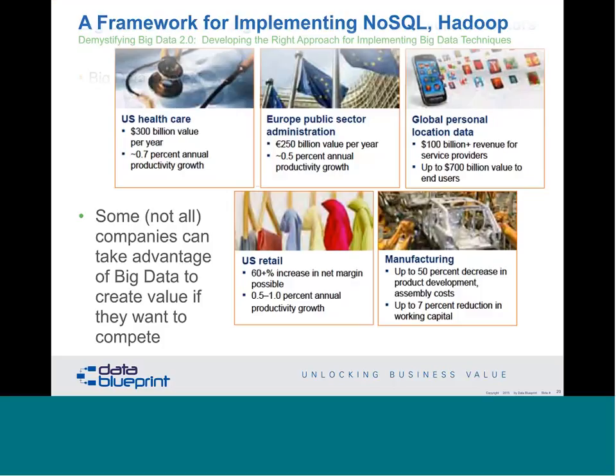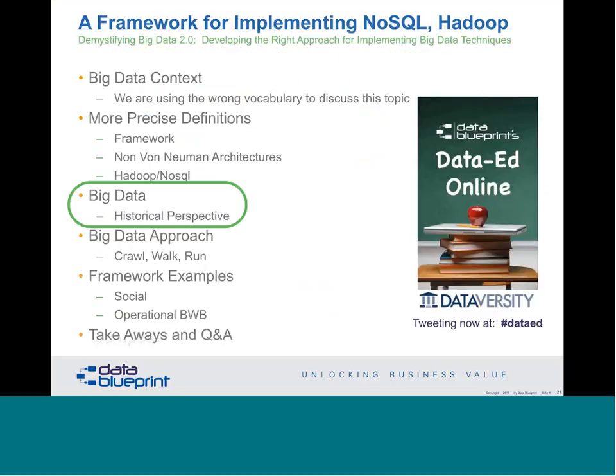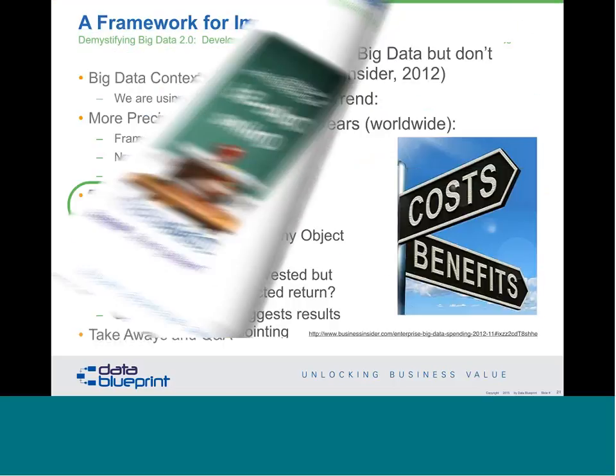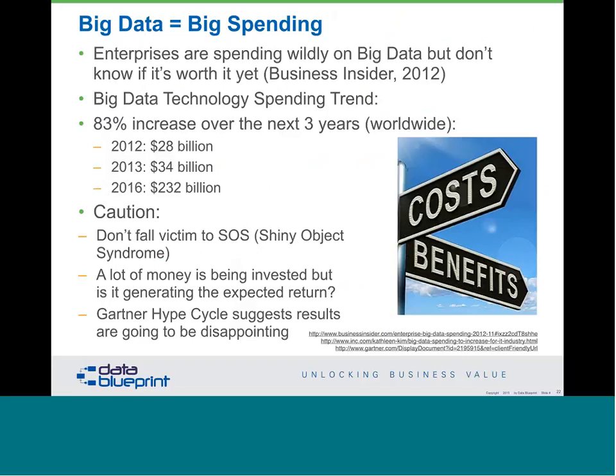Looking historically at spending increases, one projection puts it at $232 billion by 2016. We caution all of our customers to not fall victim to the shiny object syndrome. There's a lot of money being invested, but is it generating the expected returns? The Gartner Hype Cycle suggests the results are going to be disappointing.